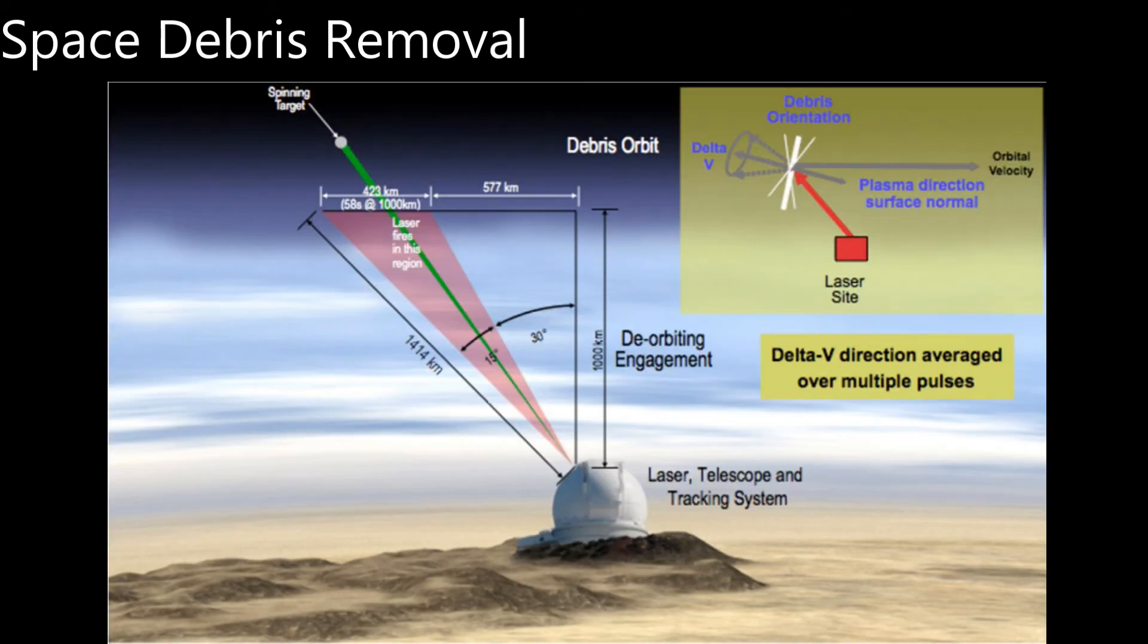Another method of space debris removal is laser ablation from the surface of the Earth. In this method, objects are heated up by surface-based lasers, and this is used as a way of reducing their speeds or adjusting their orbit and deorbiting them. However, this effect requires a lot of power and is limited by atmospheric disturbances.